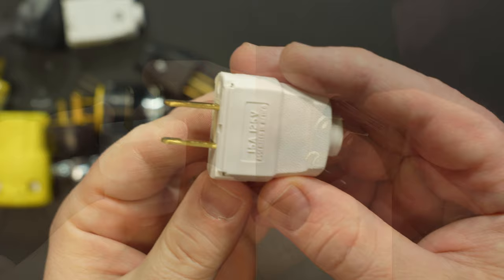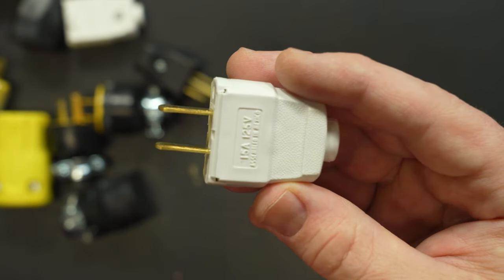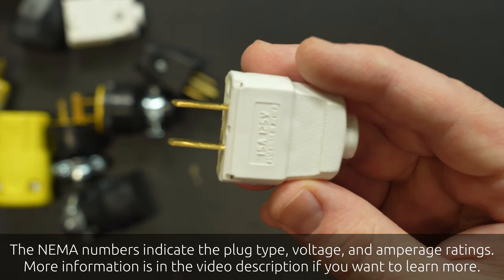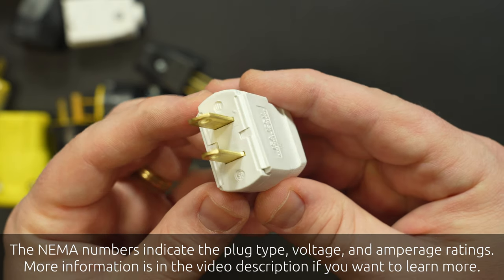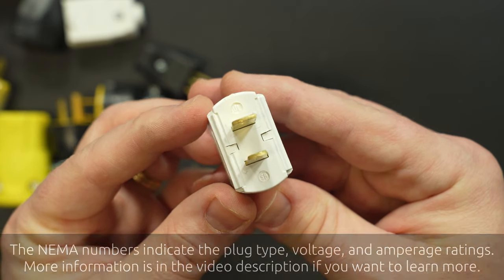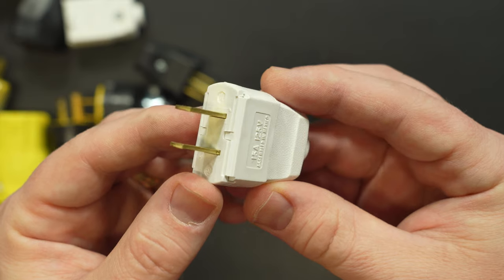The first is referred to as a NEMA 1-15 and it only has two prongs, one for the hot and one for the neutral wire. This is typically used on small appliances like lamps or fans, clocks, radios, battery chargers, that sort of thing.